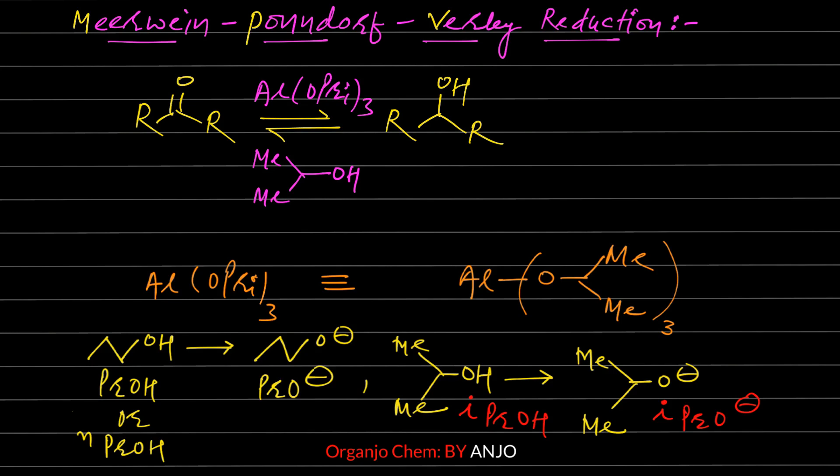In MPV Reduction, Aluminum Isopropoxide is used as a Lewis Acid. If we look at Aluminum Isopropoxide as a Lewis Acid, we can see its structure.